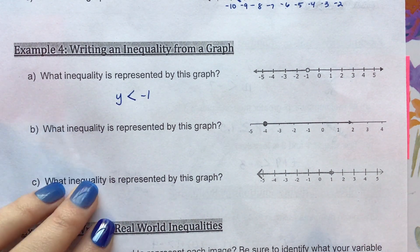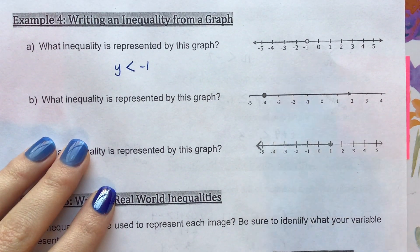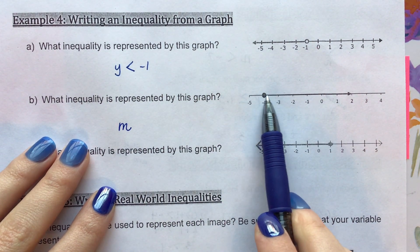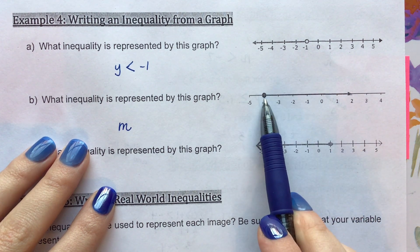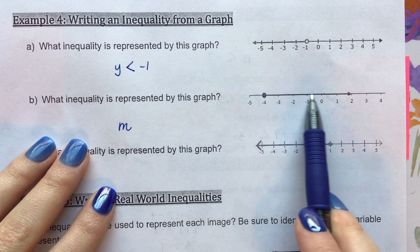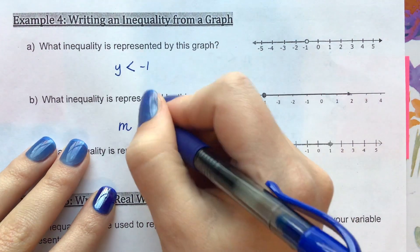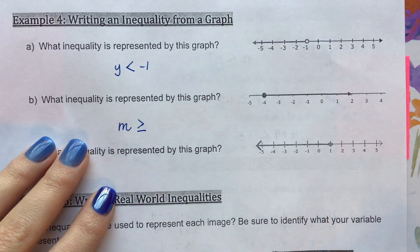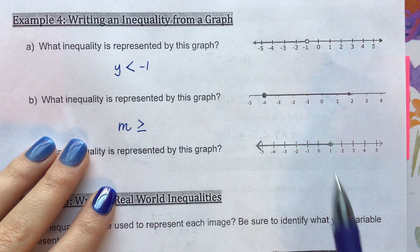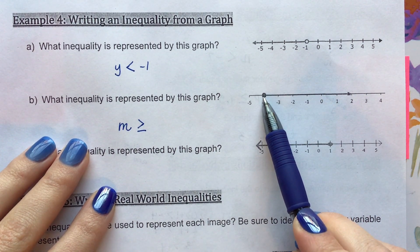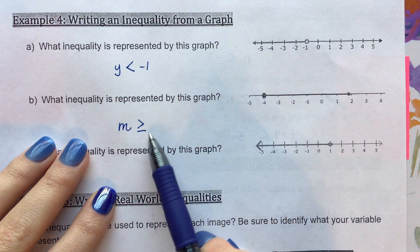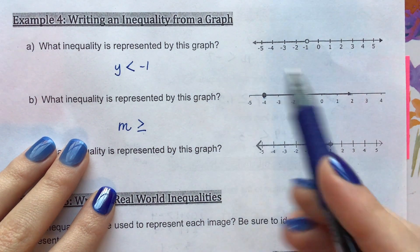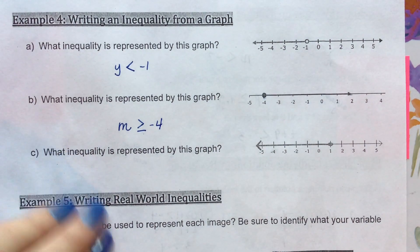For the next example: write the inequality represented by the graph. I'll use variable m. The arrow is going to the right, and the circle is filled in, so I need a 'greater than or equal to' symbol. The filled circle tells me to include the 'or equal to' part. The dot is above negative 4, so the answer is m is greater than or equal to negative 4.